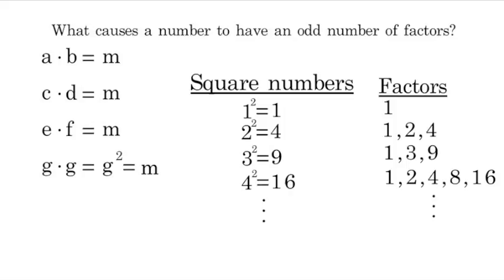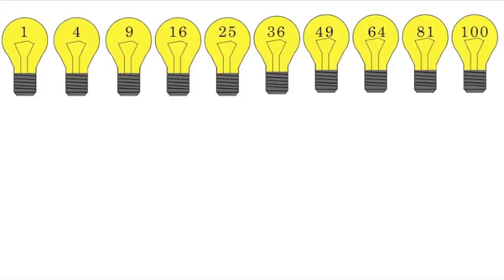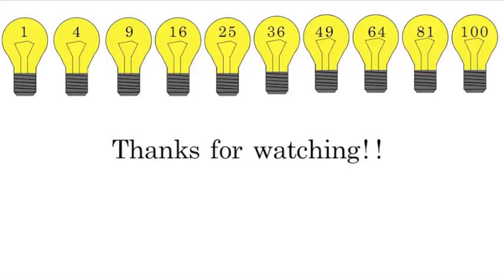So the answer to this problem is that there are 10 light bulbs on after all 100 guys have walked through, and the numbers they are represented by are the first 10 whole square numbers. So thanks for watching. This was a fun problem. Just look out for the next video.